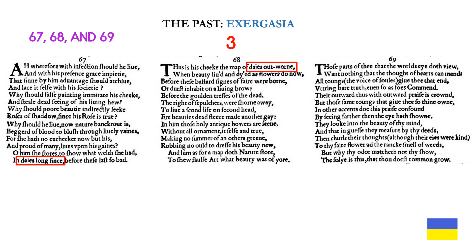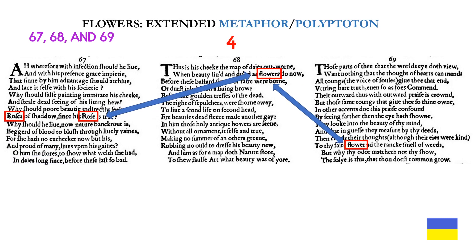Sonnets 67 and 68 are connected through the theme of the past — another example of exergesia. Days long since in line 14 of sonnet 67 leads directly to the first line of sonnet 68 with days outworn. You can switch these out for each other and still get the same meaning, and they share the same rhythm. Finally, for the extended metaphor, we have the theme of flowers: roses and rose from sonnet 67 connect to flowers in sonnet 68, which connects to flower in sonnet 69.